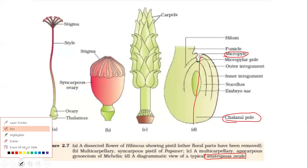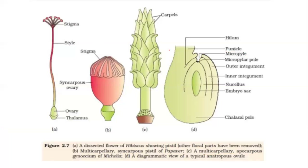The ovule has a particular structure that serves as an attachment to the placenta. The ovule lies inside the placenta of the ovary, and it is attached to the placenta by a structure called the funicle. The funicle provides the attachment of the ovule to the ovary through the placenta.